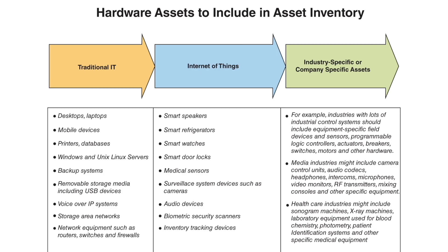Once you have such a system in place, you should always do regular testing to see if it catches all new hardware. One very good method to identify unauthorized assets is to ensure that hardware asset inventory records show network addresses, hardware addresses, machine name, data asset owner, and department for managing that device. This is how you can manage your hardware within your company and ensure there are no unauthorized devices within your network.